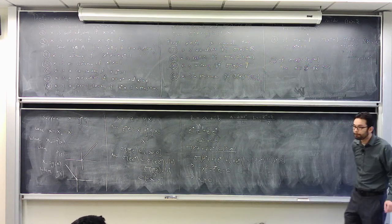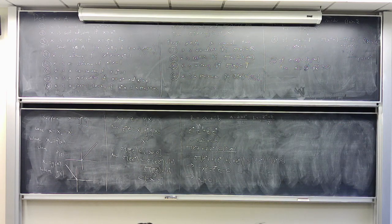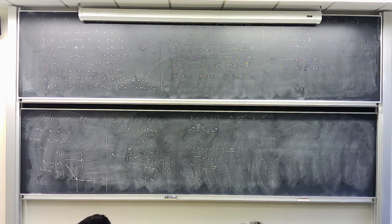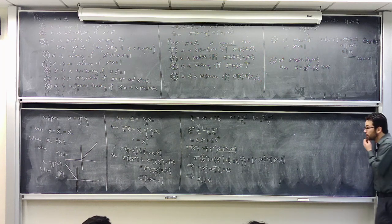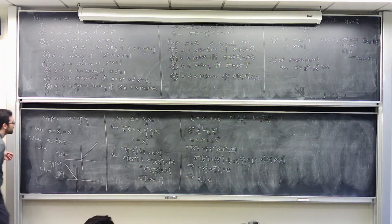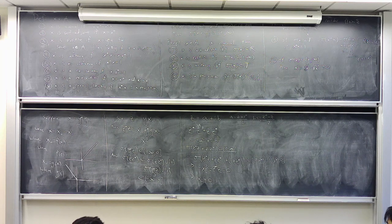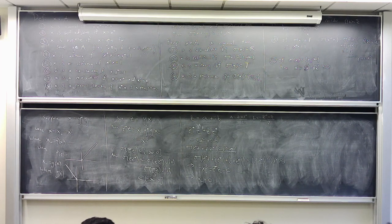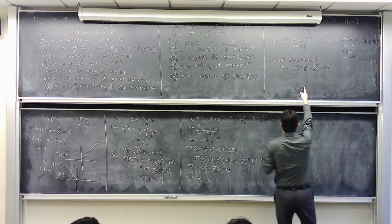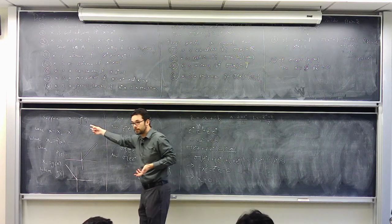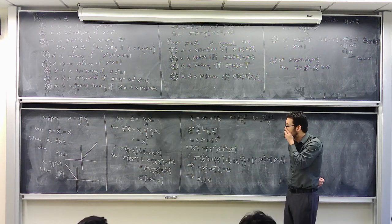Student question: Y*Y is self-adjoint, so why don't we just take the square root of Y*Y? Response: To take the square root via functional calculus, we need a continuous function defined on the spectrum. If we knew the spectrum was in the non-negatives we could do that with no problem — but that's exactly what we're trying to show. We don't know the spectrum yet, so we can't assume it's non-negative.